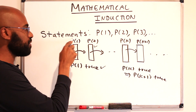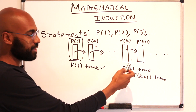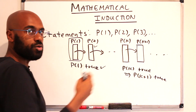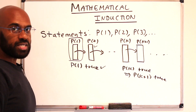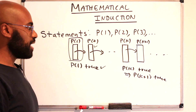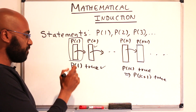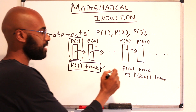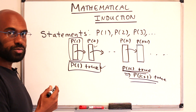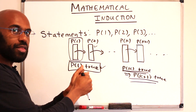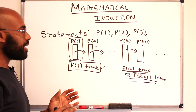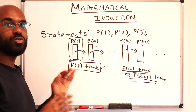So once we trigger this domino, knowing the fact that when we have a domino that's hit the next one gets hit, all of these dominoes are going to fall. The proof technique here is: if we have statements labeled by the positive integers and we know two things — that the first statement is true, and that if any given statement is true then the next statement is true — we can use these two together to say that all the statements are true.